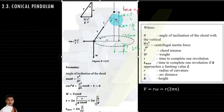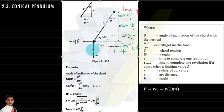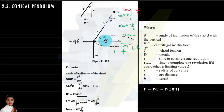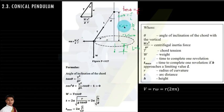This is our figure or simple illustration showing the relations between our variables. The angle of inclination of the chord is denoted by theta. From theta we can solve other variables — for example, to relate the radius of curvature r and height h, we can use tangent theta = r/h.